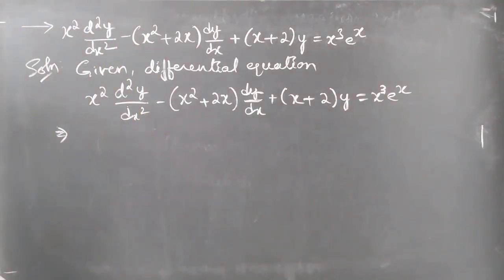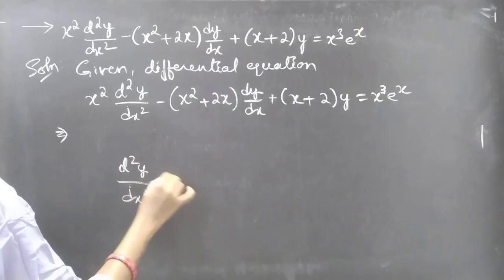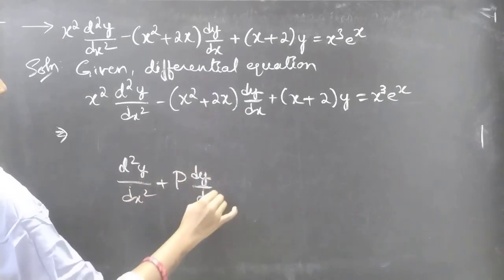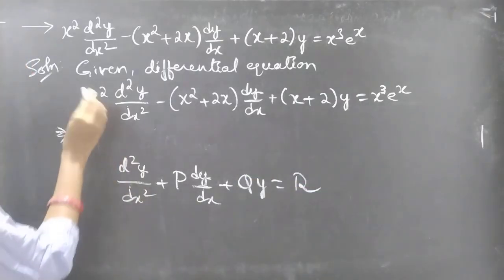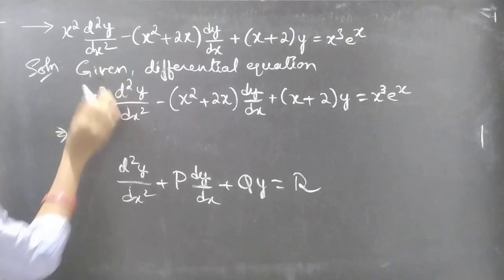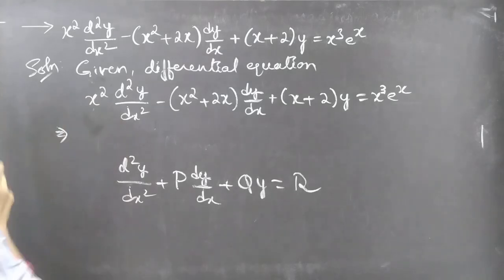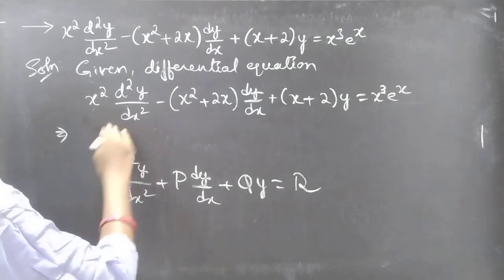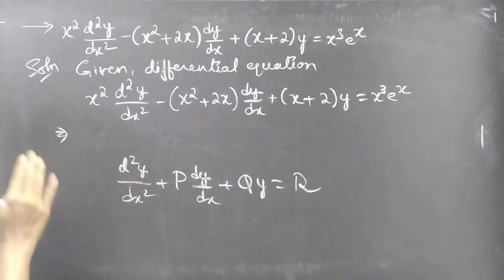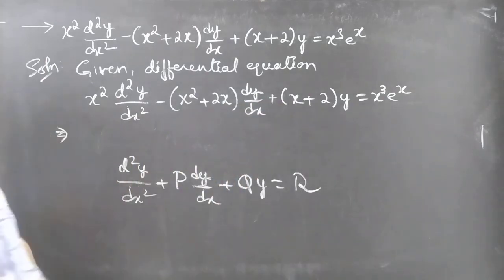Now let's write the given differential equation in standard form of a second order equation: d²y/dx² plus P times dy/dx plus Q times y equals R. We need to make the coefficient of d²y/dx² equal to unity. For that purpose we will divide both sides of the equation by x squared.